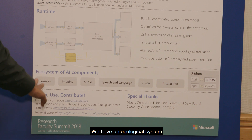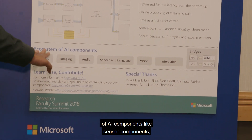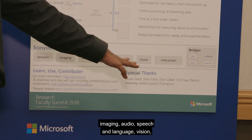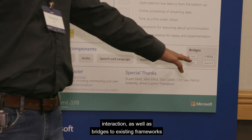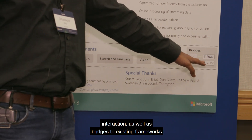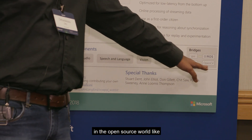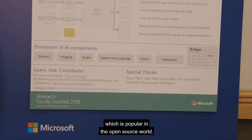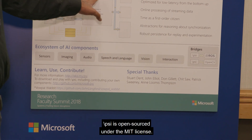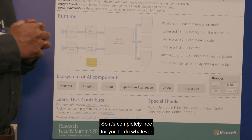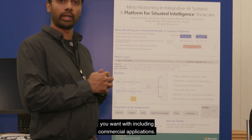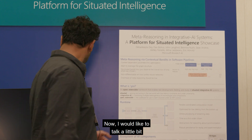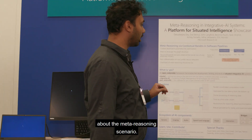We have a large ecosystem of AI components — like sensor components, imaging, audio, speech and language, vision, and interaction — as well as bridges to existing frameworks in the open source world, like the OpenCV library and the Robot Operating System, which is popular in the open source world. PSI is open sourced under the MIT license, so it's completely free for you to do whatever you want with, including commercial applications. And now I would like to talk a little bit about the meta reasoning scenario.